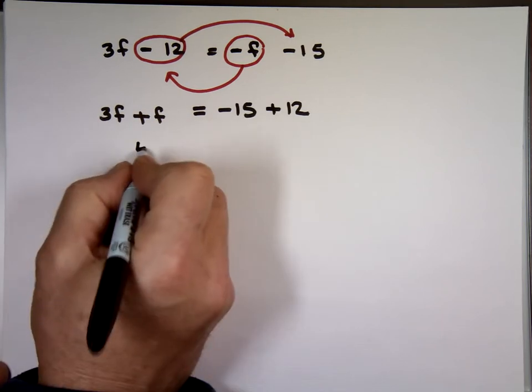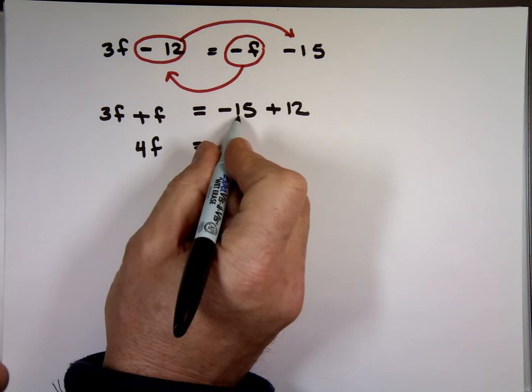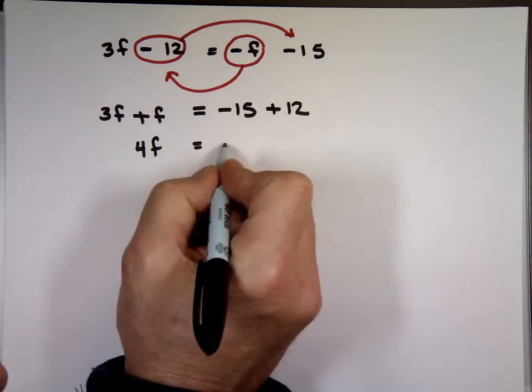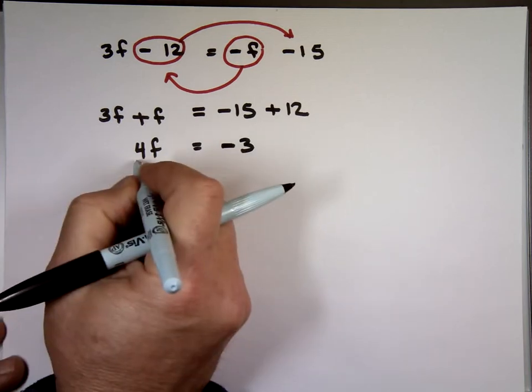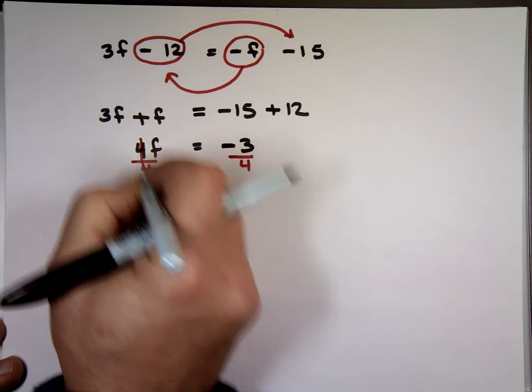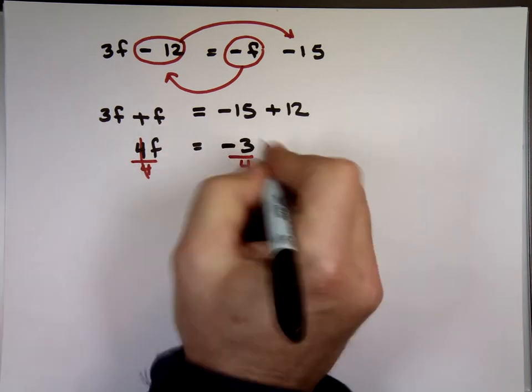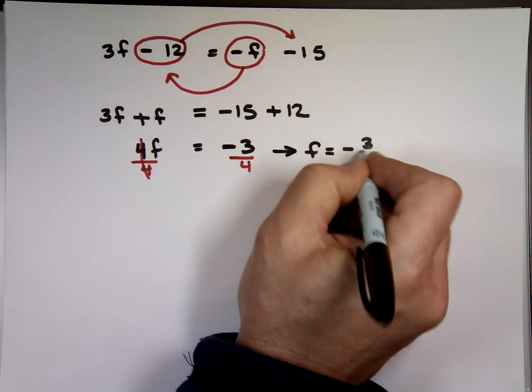3F and F? 4F. Because that's a 1 here. What's negative 15 plus 12? Negative 3. And now I've got to solve for F. I need to make sure this is 1, so you divide by what? 4. F equals negative 3 over 4.